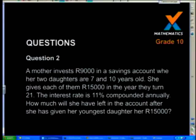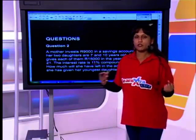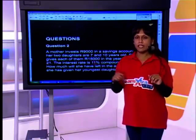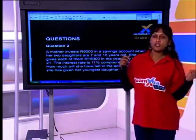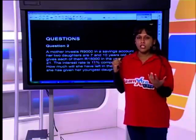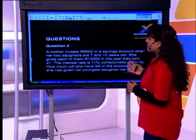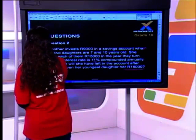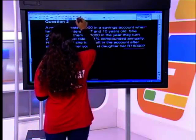Next example: a mother invests 9,000 Rand in a savings account when her two daughters are seven and ten years old. She gives each of them 15,000 Rand in the year they turn 21. The interest rate is 11% compounded annually. How much will she have left in the account after she has given the youngest daughter 15,000 Rand? This seems complicated but a timeline will help us answer it.